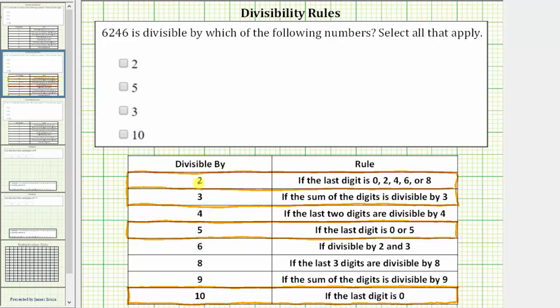To begin, a number is divisible by 2 if the last digit is 0, 2, 4, 6, or 8, which means the number is even. The last digit of 6,246 is 6, and therefore 6,246 is divisible by 2. So let's go ahead and circle the 2 indicating the number is divisible by 2.